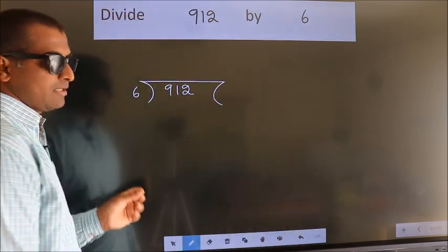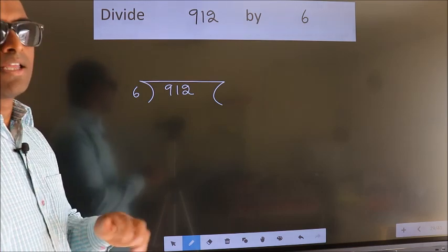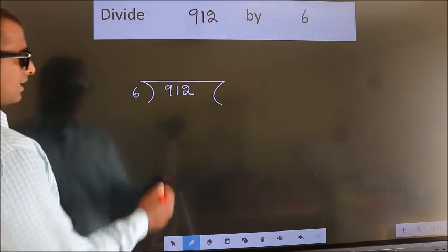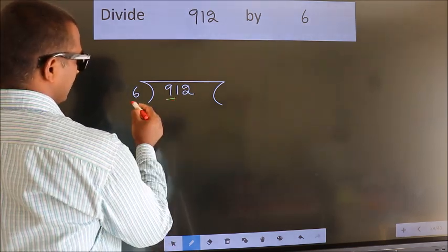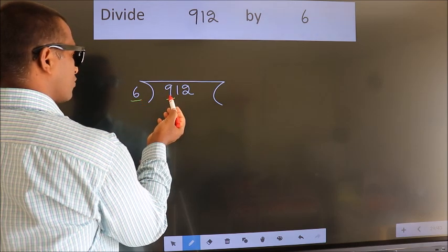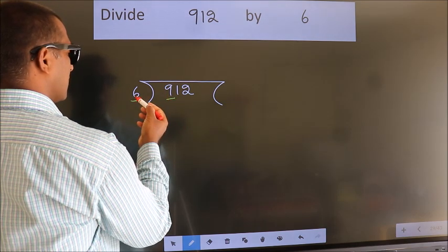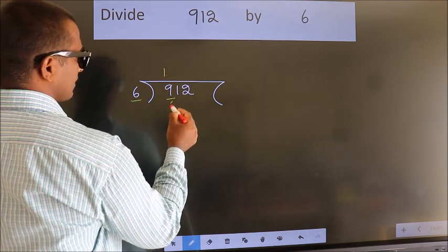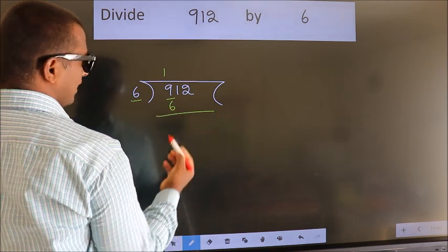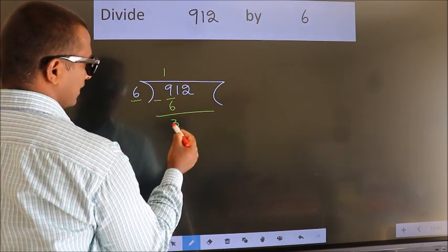This is your step 1. Next, here we have 9, here 6. A number close to 9 in 6 table is 6 times 1, 6. Now we should subtract. We get 3.